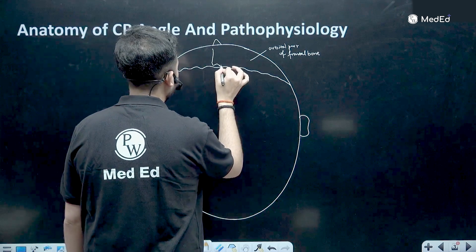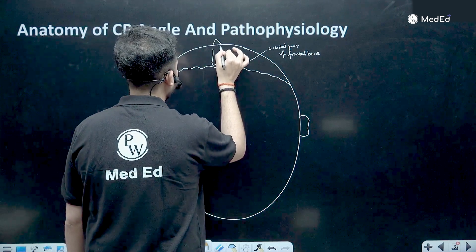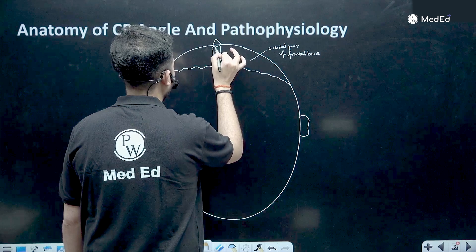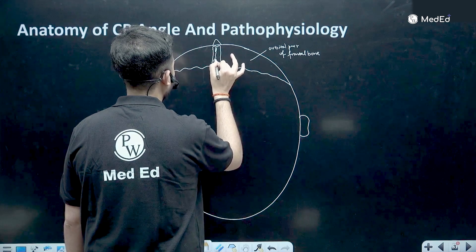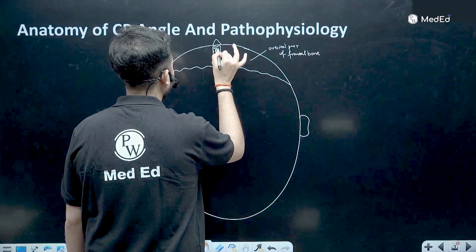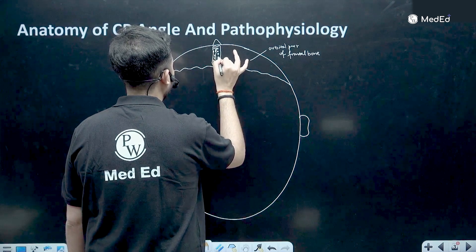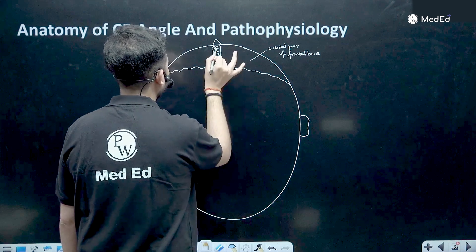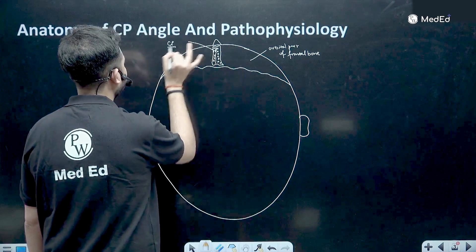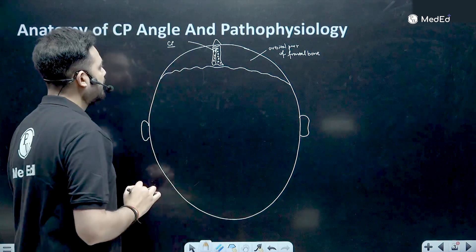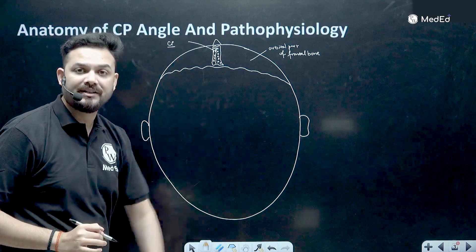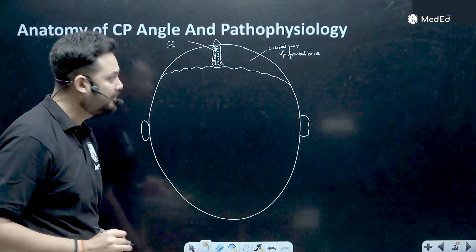In the center you have a bone which is a part of your ethmoid bone, called the cribriform plate. It has got multiple cribriform foramina. The olfactory neurons enter through these foramina.